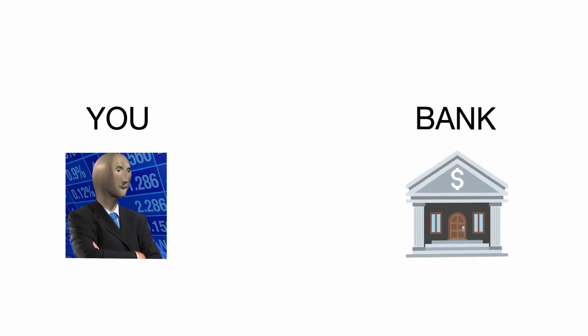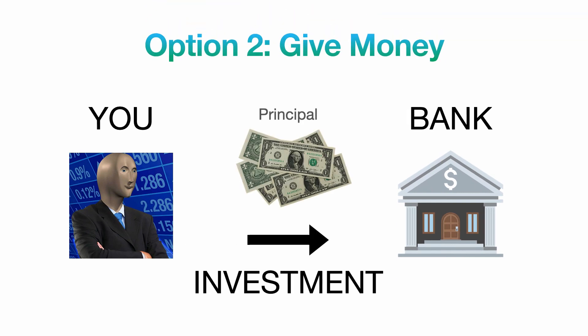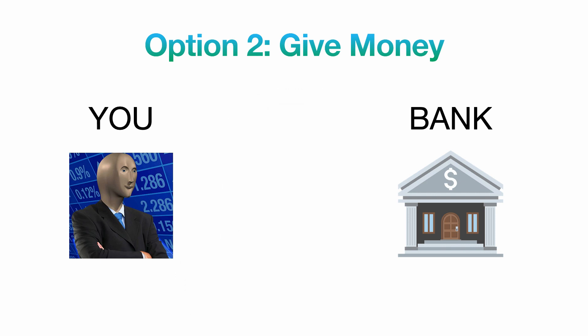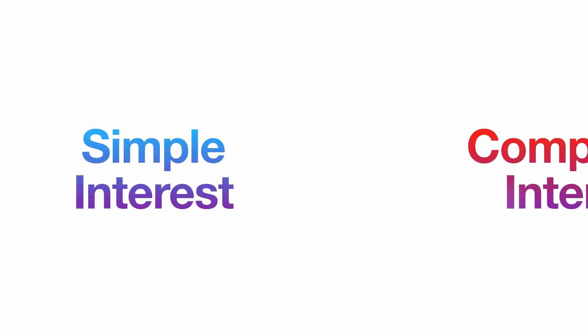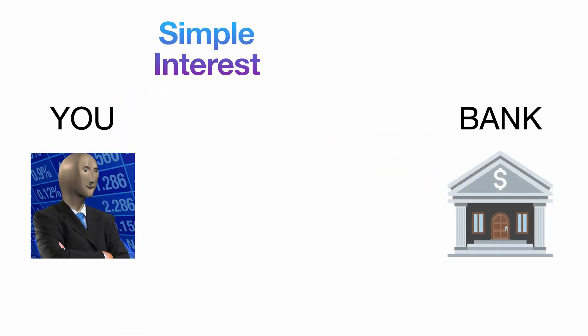The second choice you could make is to actually give the bank your money, and that's called an investment, with the initial amount also called the principal. The bank is going to give you some compensation for that money, also known as interest. Now there are two types of interest rates, simple interest and compound interest.